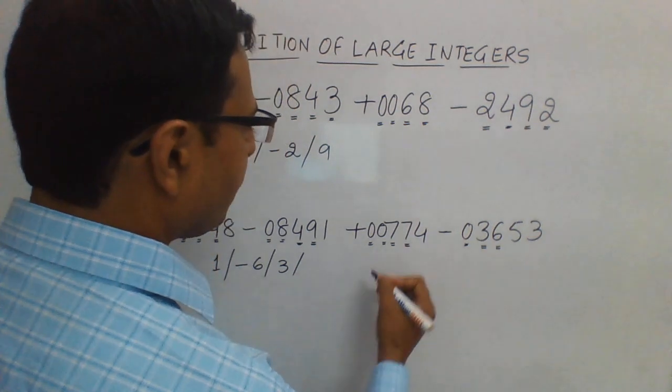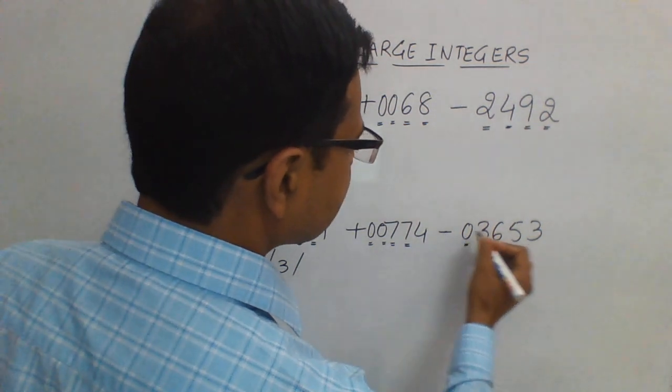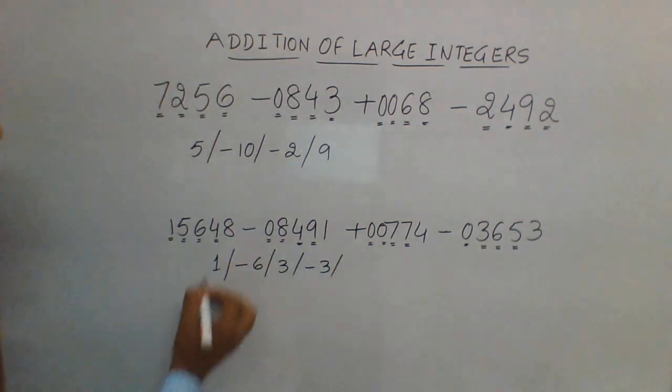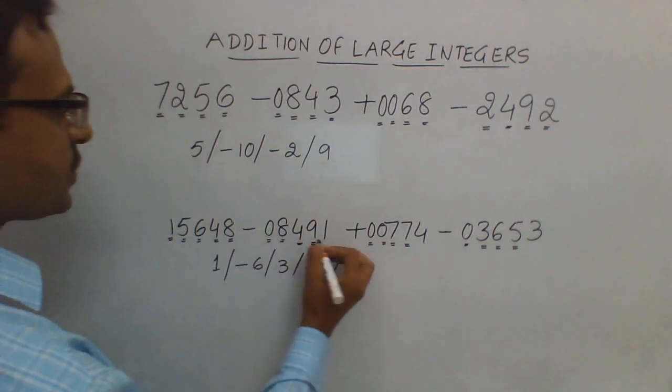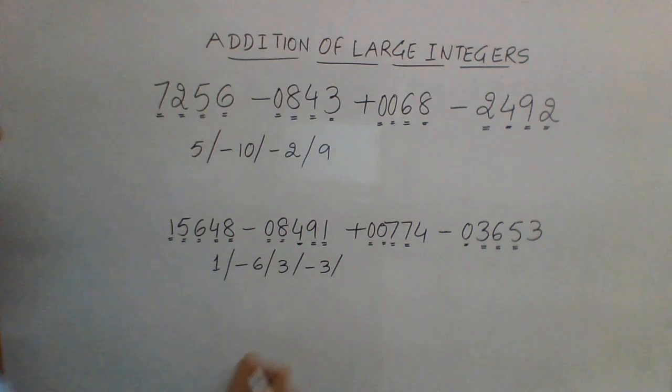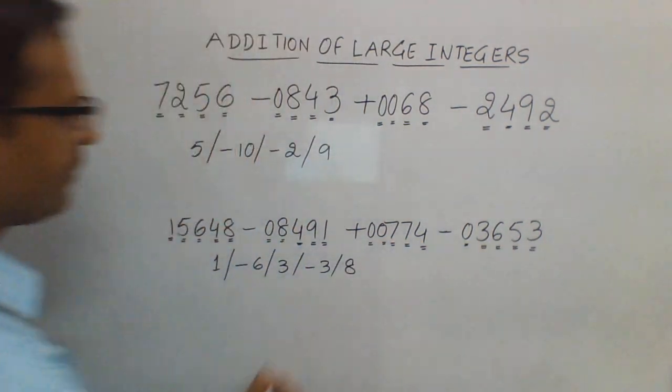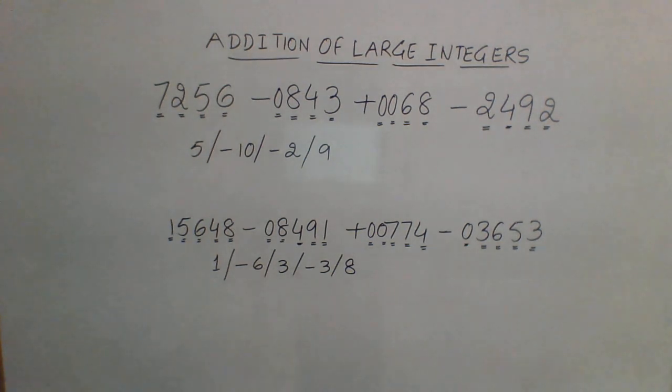Finally, 8 minus 1 is 7, 7 plus 4 is 11, 11 minus 3 is 8. So now you see you have found out the 5 digits which are required here.